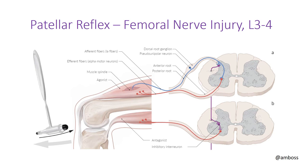The patellar reflex is elicited by striking the patellar tendon, sending sensory information back through the dorsal root ganglion. An afferent fiber then travels through the ventral root to cause muscle contraction, while an inhibitory fiber simultaneously inhibits the antagonist hamstring muscles. This reflex tests the femoral nerve, specifically spinal segments L3 through L4 — even though the femoral nerve spans L2 through L4.